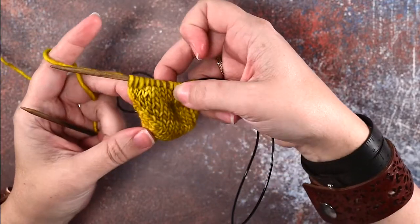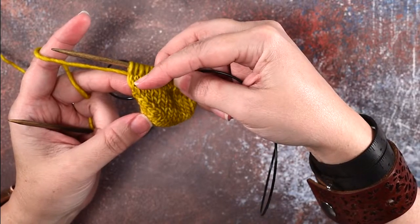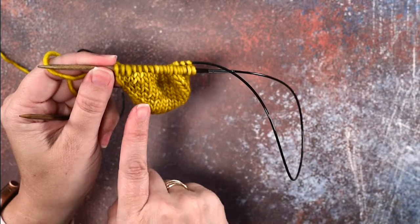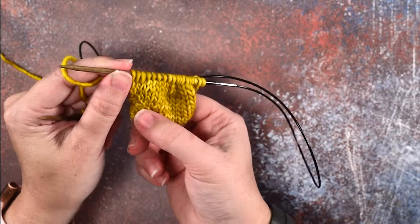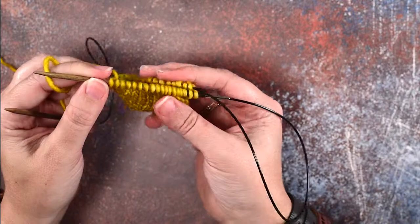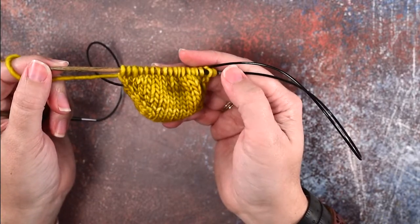As you can see, we've created a make one right that increased our work and it's leaning to the right from the last stitch that we worked. So that's how you create a make one right or an M1R. I hope this helps you guys out, thanks for watching.